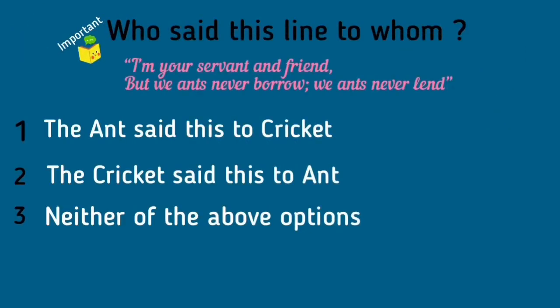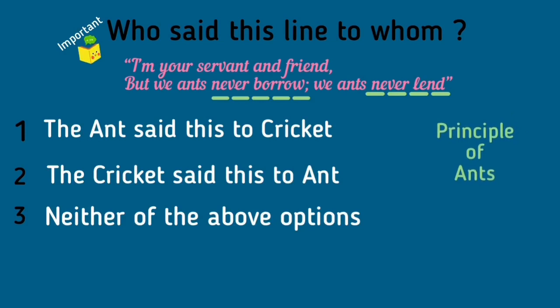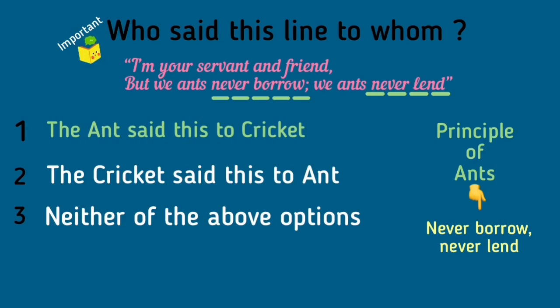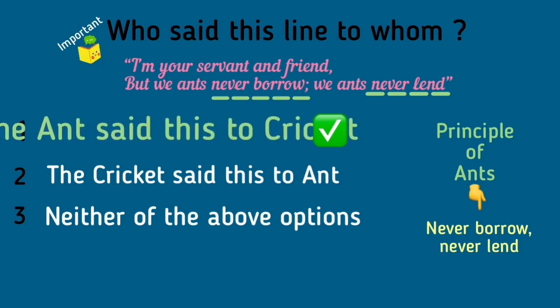Who said this line to whom? 'I am your servant and friend. But we ants never borrow. We ants never lend.' Options: Ant said this to cricket; the cricket said this to ant; or neither of the above. When the cricket asks the ant for food and shelter, the ant replies: 'I am your servant and friend, but we ants never borrow and never lend.' So the ant said this line to the cricket — option one is correct.